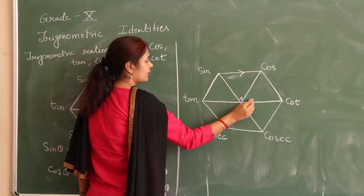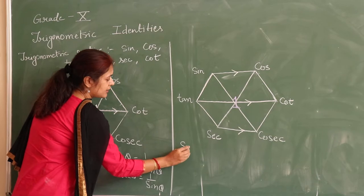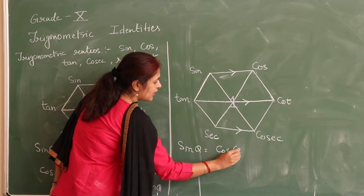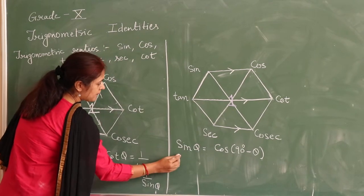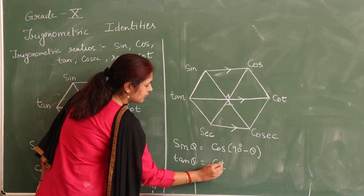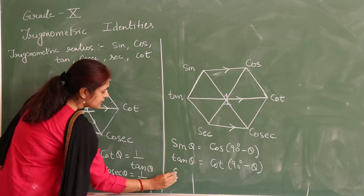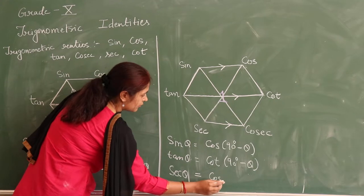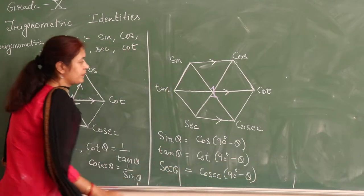Sin theta is equal to cos 90 degrees minus theta. Next is tan theta is equal to cot 90 degrees minus theta. And the last is sec theta is equal to cosec 90 degrees minus theta.